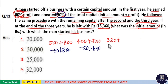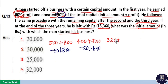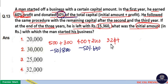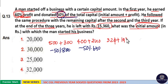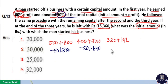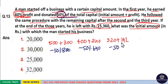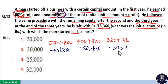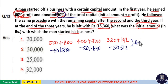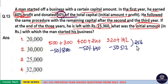He got 60% of 320. 10% of 320 is 32, so 60% is 6 × 32 = 192 rupees. He donated 50% of 320 plus 192, which is 50% of 512 = 256 rupees donated. Remaining is 256 rupees at the end of the third year.